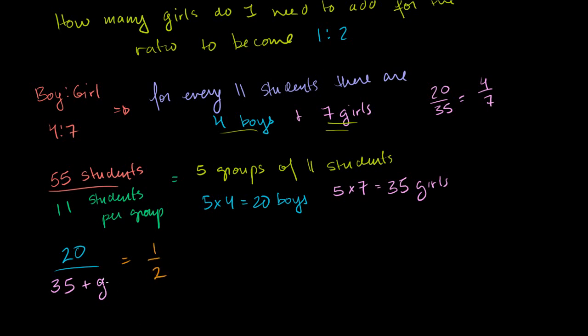So I have an equation. I have one unknown. I can just solve for it. You can almost do this one in your head. 20 is to what? 1 is to 2 as 20 is to what? You could say, oh, 20 is, 1 is half of 2, 20 is half of 40. So you could say, oh, this must be 40. So g would be equal to 5.